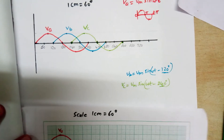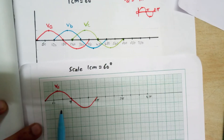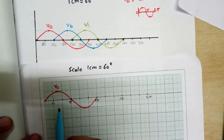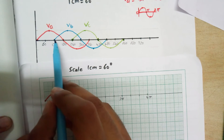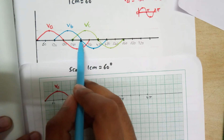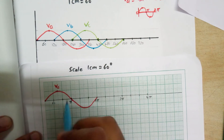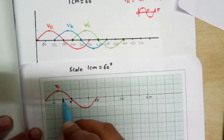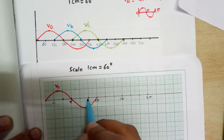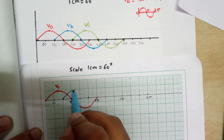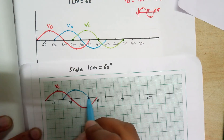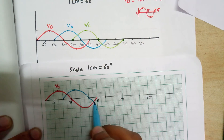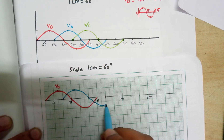Now we can draw this in graph paper. We have already drawn Va. Now we have to draw Vb. Vb will start from 120 degrees, then end after 180 degrees — the top part will end after 180 degrees and it will have a peak point after 1.5 cm. So the wave starts from 120 degrees, reaches peak at 1.5 cm, and conducts till 300 degrees. This is our top part.